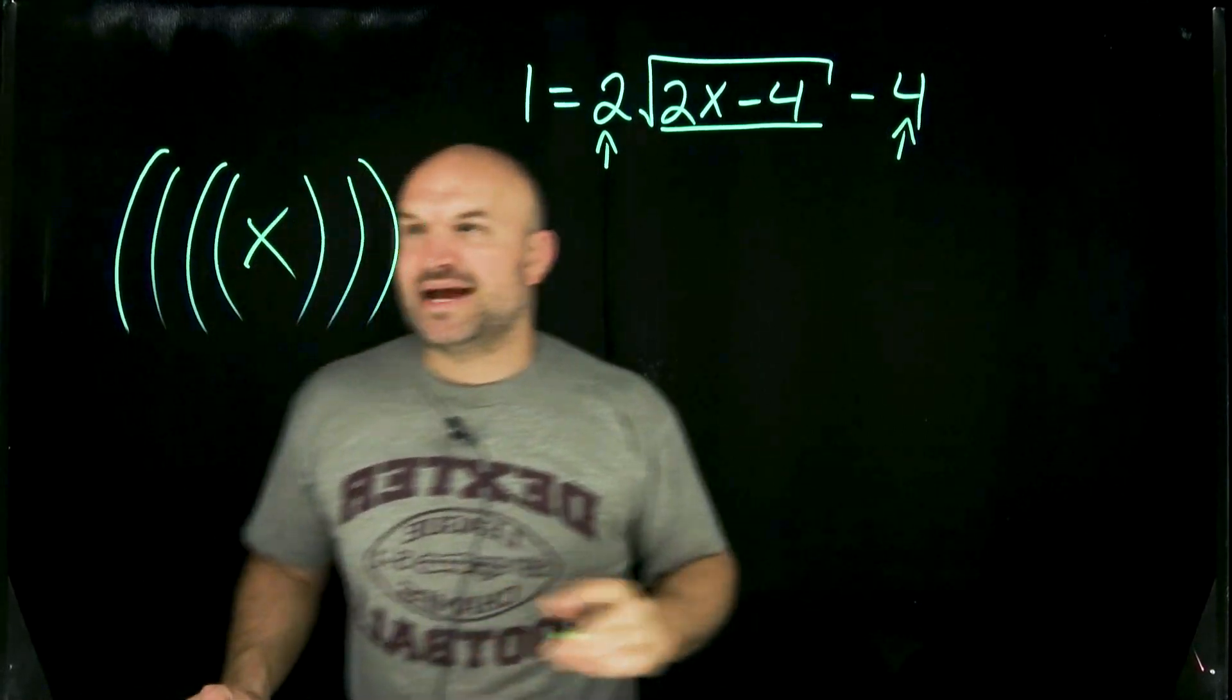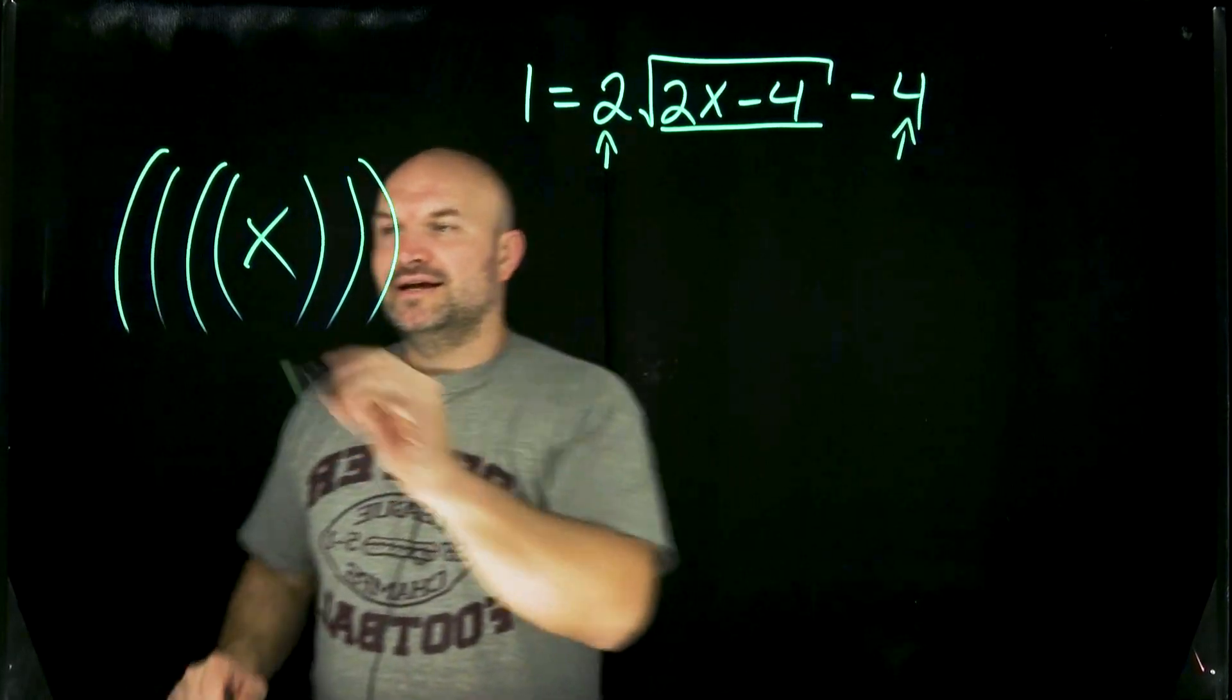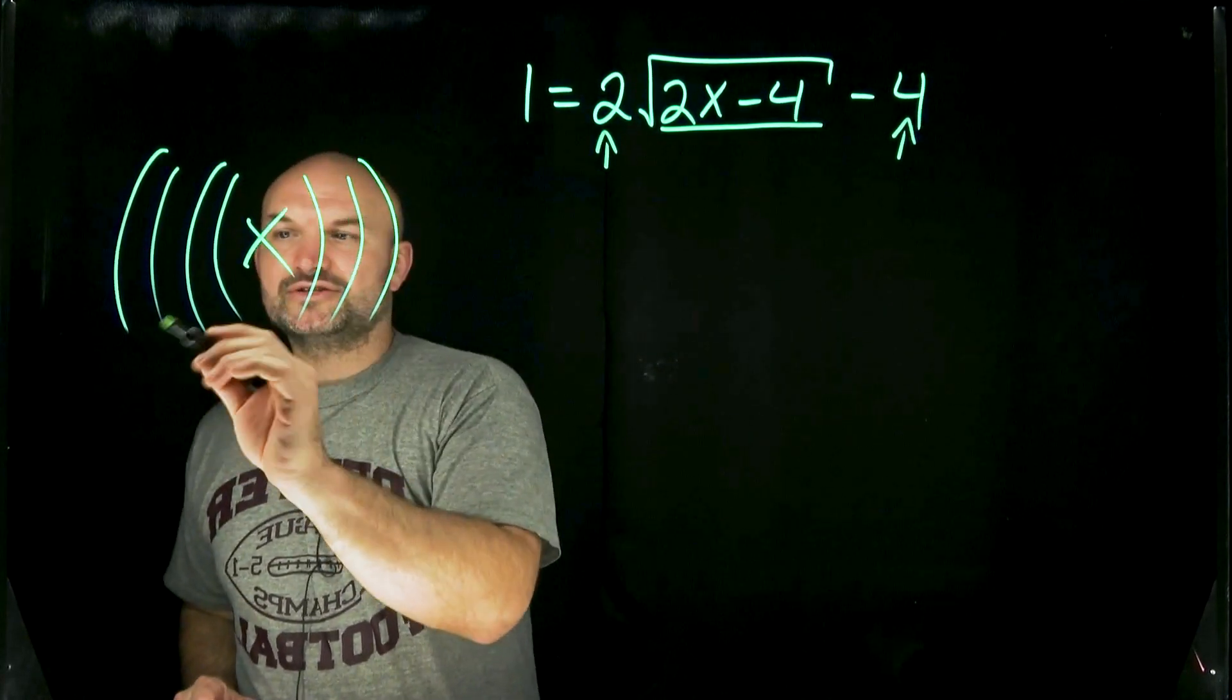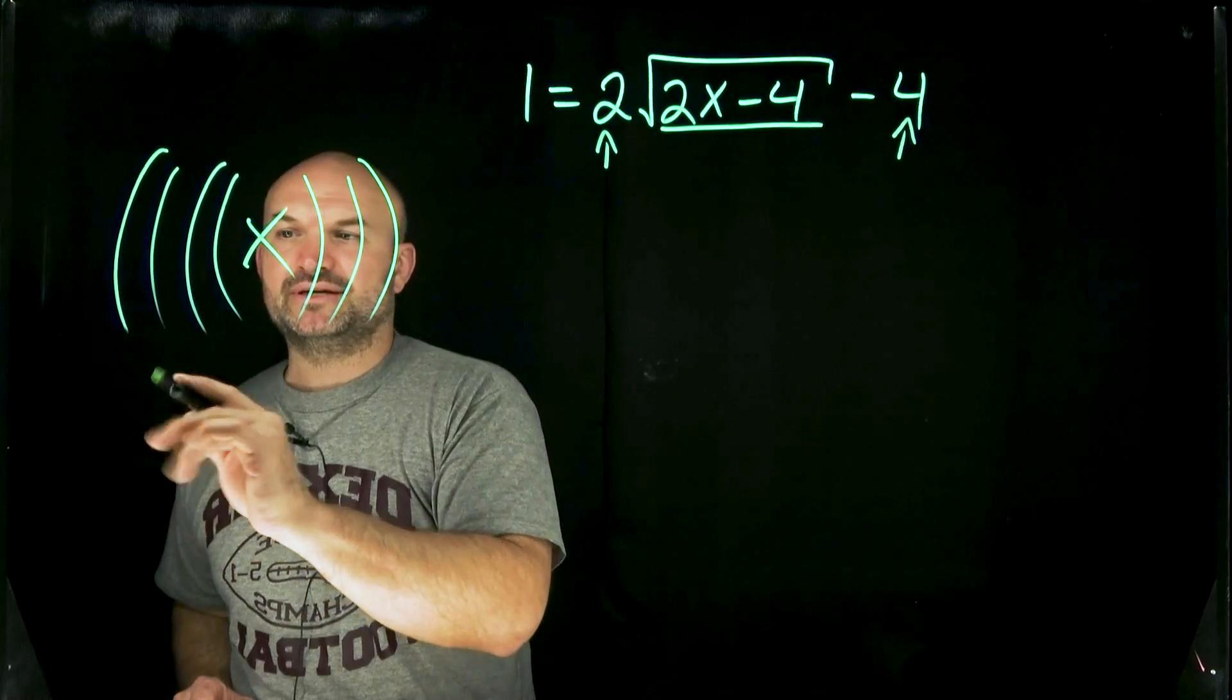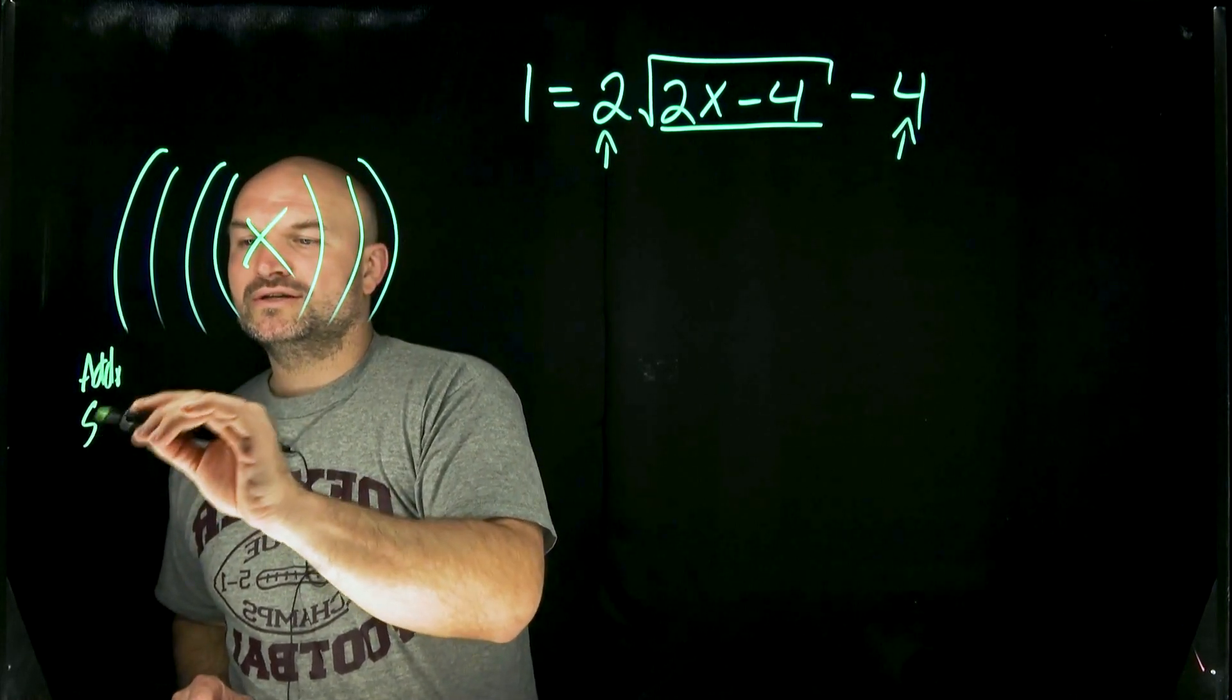And what we want to do is we want to work from the outside all the way in. So in this middle, here we have the nice little x. So what we're going to do is we're going to work on this outside, and these are going to be like your operations. So the first operation that we always want to be able to do is anything that we have addition or subtraction.